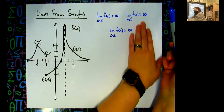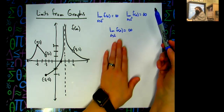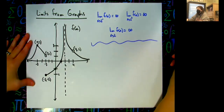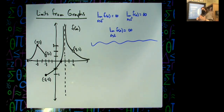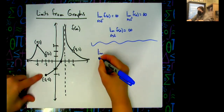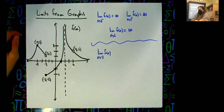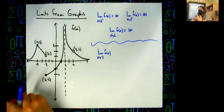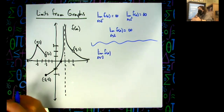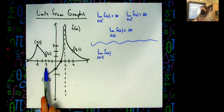Now I don't have to explicitly show left and right every time. I could just ask you for an overall limit, and then you have to automatically check from the left and check from the right. So if I asked you for the limit as x approaches negative three of f of x — I'm not asking from the left or from the right — you still have to at least mentally check both sides. Here's negative three on my x axis.